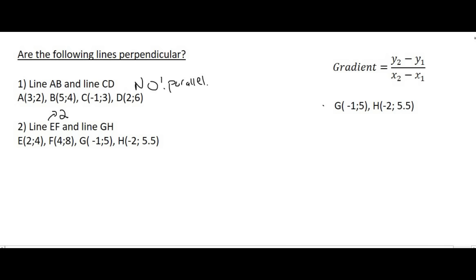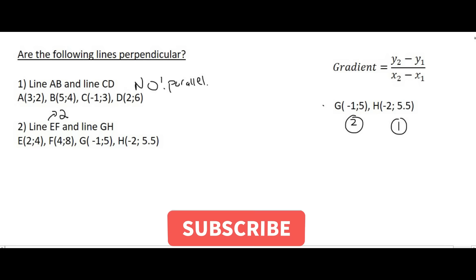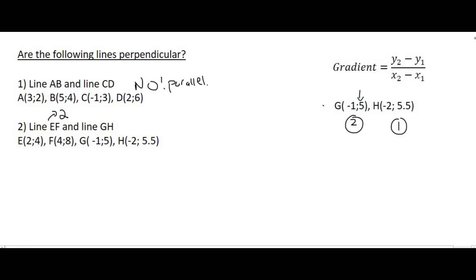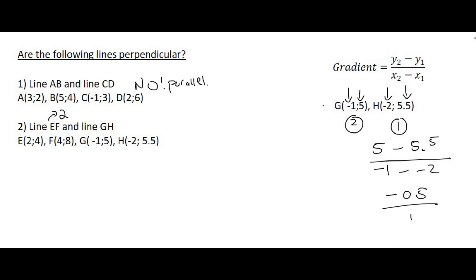Now let's work out the gradient of GH. I'll call G point number 2 and H point number 1. The y value of point 2 is 5, the y value of point 1 is 5.5, the x value of point 2 is minus 1, and the x value of point 1 is minus 2. The numerator gives negative a half and the denominator gives 1, so the gradient of GH is negative a half. Multiplying the two gradients together: 2 times negative a half gives minus 1, which means these lines are perpendicular.